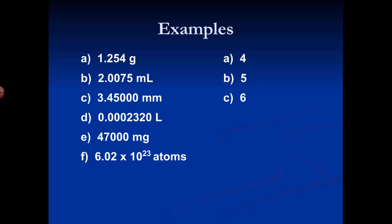D: 0.0002320 liters. The 2, the 3, and the 2 are significant. The zeros in front are leading zeros — rule three says they're never significant, so we ignore them. What about the zero at the end? It's at the end of the number and to the right of the decimal point, so it must be significant. That means this measurement has 4 significant figures.